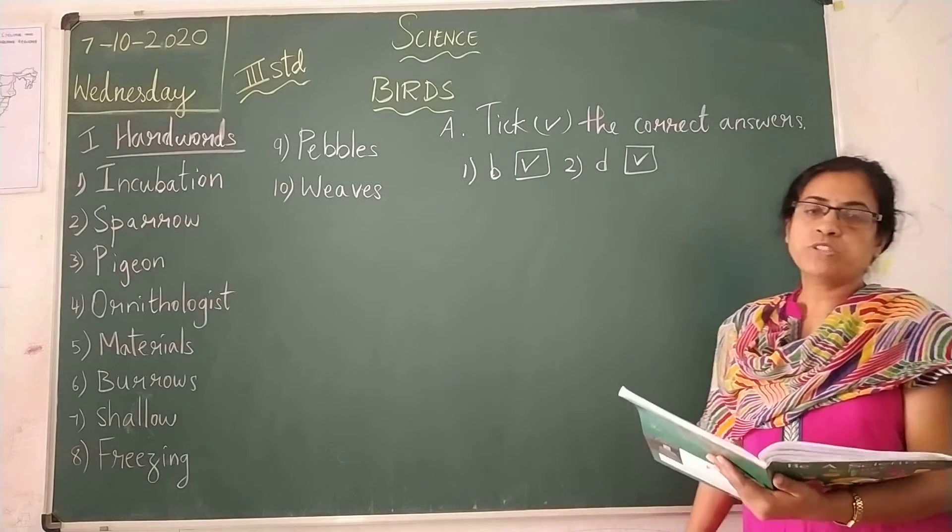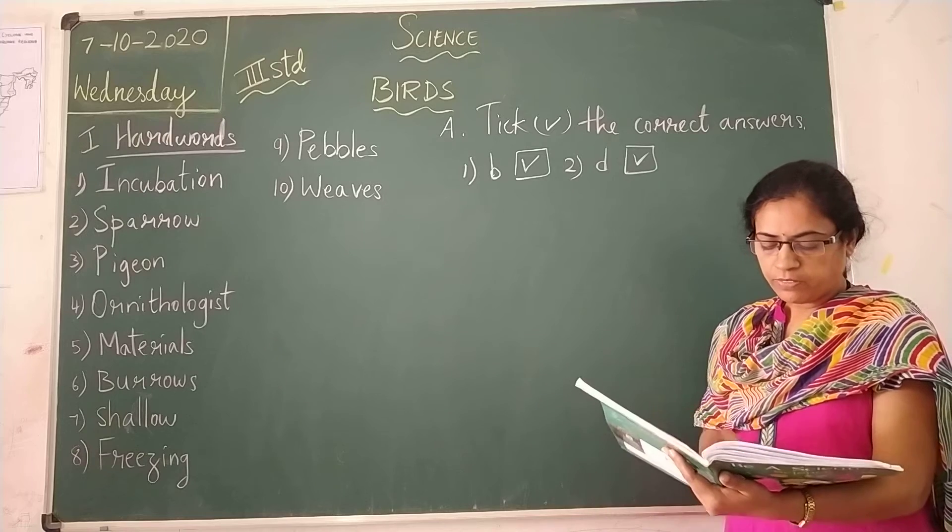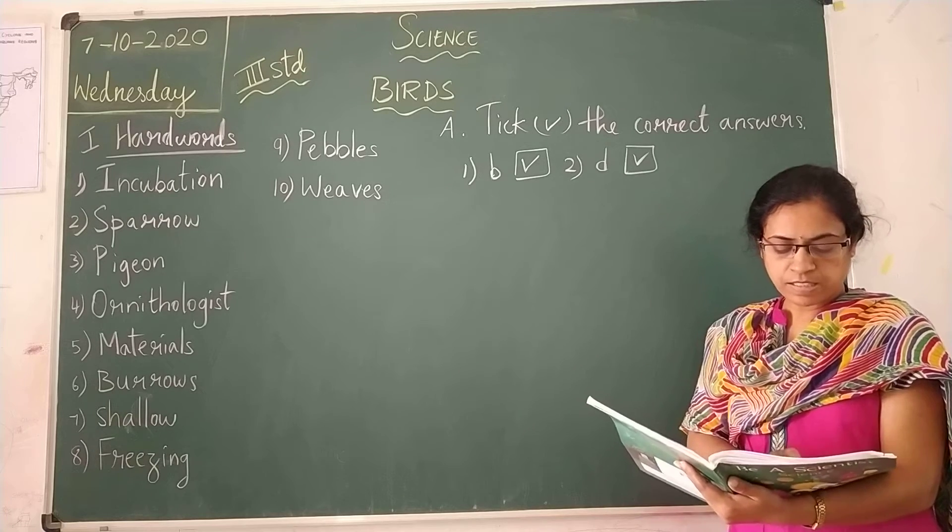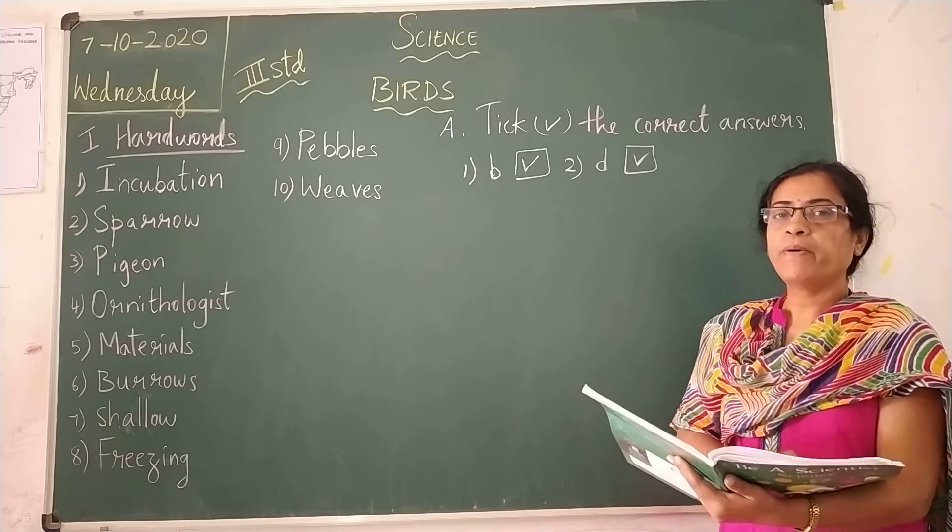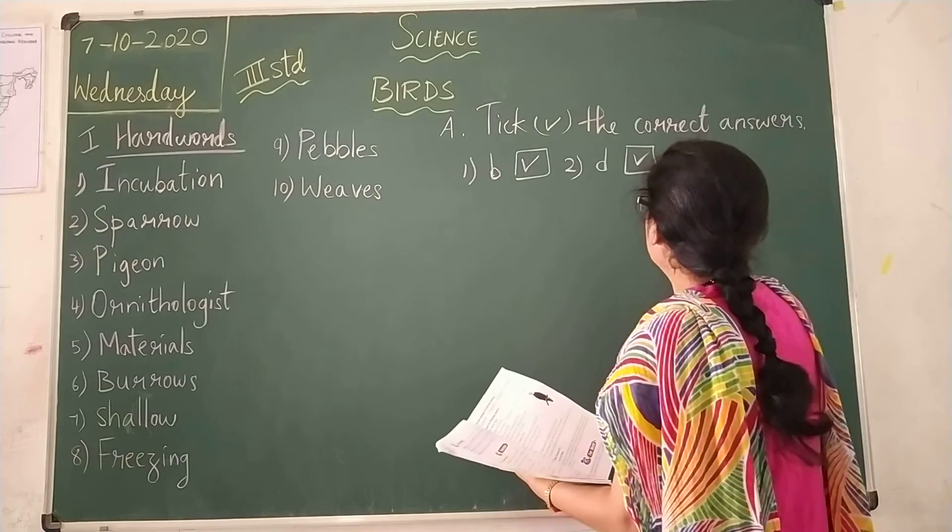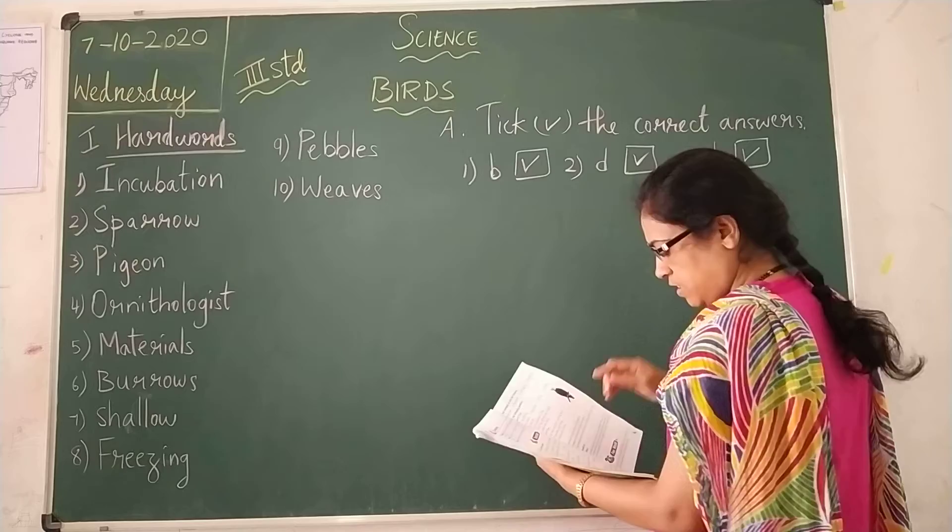And then, third one, which of the following is a flightless bird? Vulture, penguin, crane, pelican. So, it is very easy. You can answer this then. Which is the correct answer children? Vulture, penguin, crane, pelican. So, B is the correct answer there. Option B is the correctness.